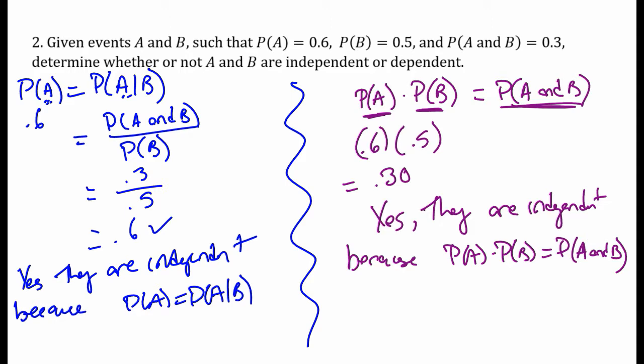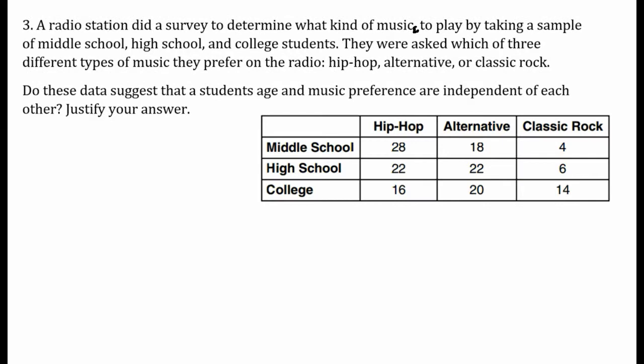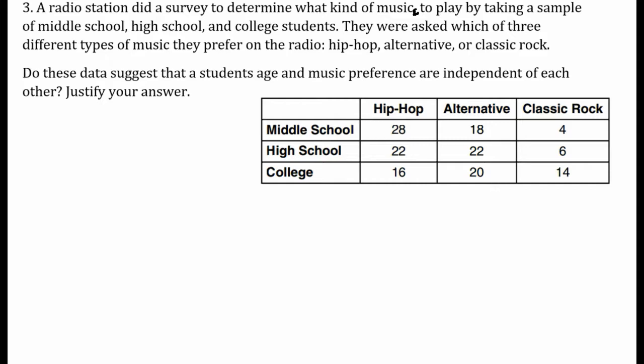However, I think the conditional probability method is the more important one to have. Finally, a radio station did a survey to determine what kind of music to play by taking a sample of middle school, high school, and college students. They were asked which of three different types of music they preferred: hip-hop, alternative, or classic rock. Do these data suggest that students' age and music preference are independent of each other? There's something I don't like about this two-way table — I'm missing the totals. I don't have my total row and column here.